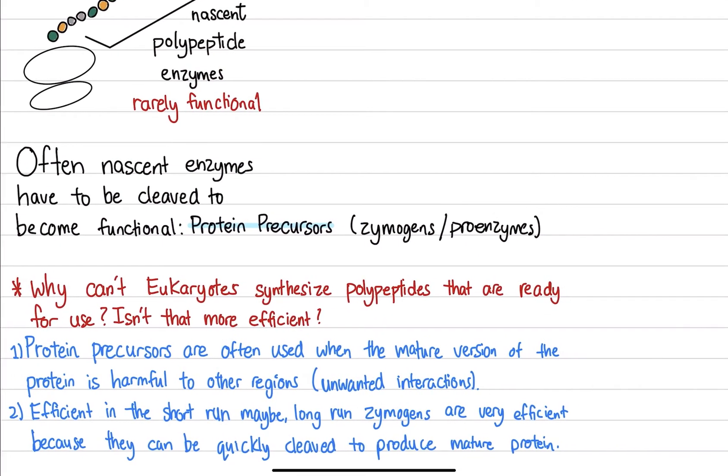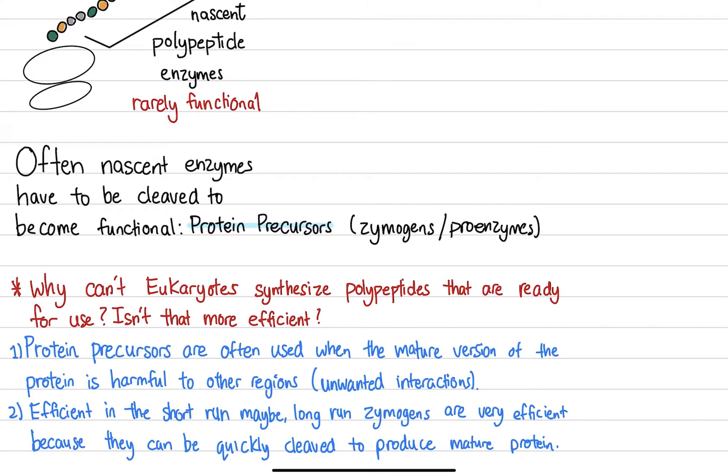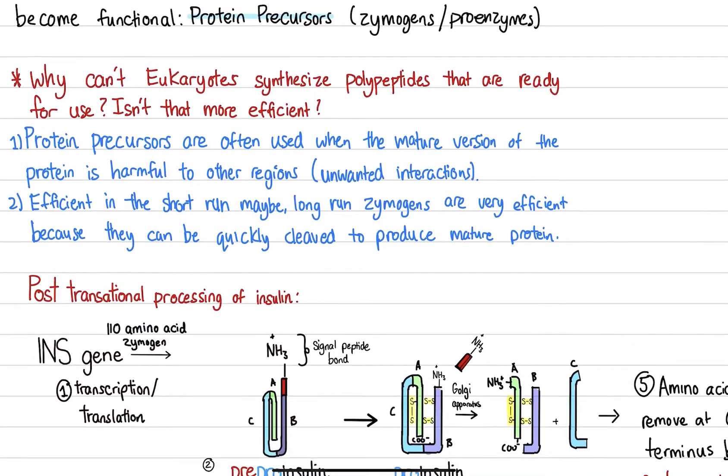Going back to this example, if we had the pre-pro-insulin, and that's made, the body, the cells can simply start to cleave it and make it an active insulin molecule, a mature insulin molecule that can then function on a very short notice. So it's very efficient in the short run. It can produce very fast.